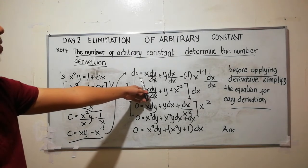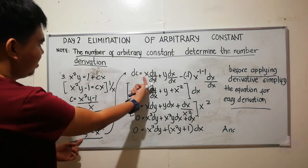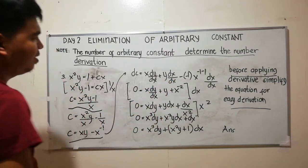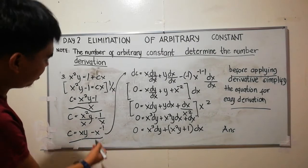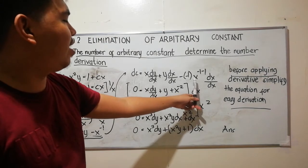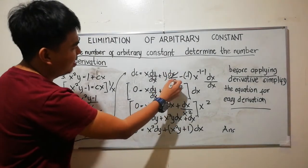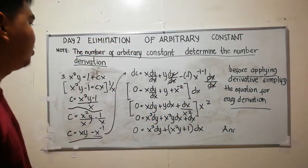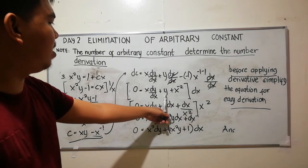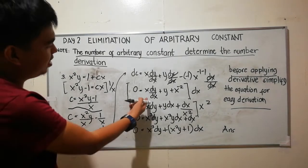The derivative of a constant is zero. Taking the derivative: 0 equals x dy/dx plus y — this is the derivative of a product — minus negative 1 times x raised to negative 1 minus 1 times dx/dx. Since dx/dx cancels, we get 0 equals x dy/dx plus y plus x raised to negative 2.